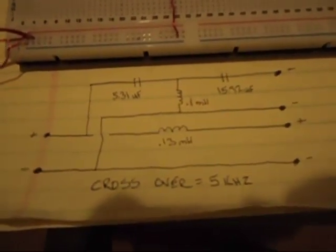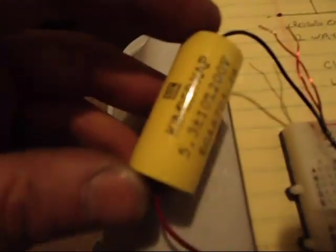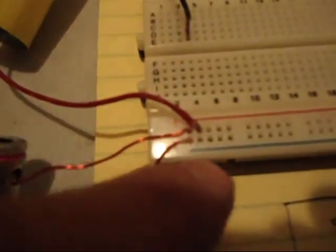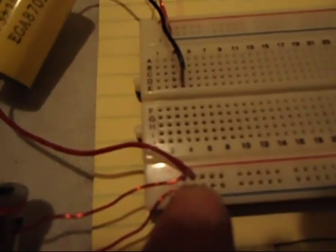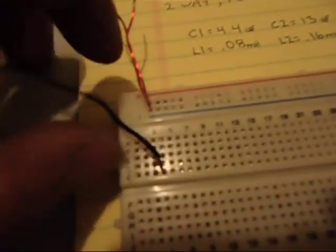Alright, what I have so far is my connections from my amplifier's positive and negative. I'll put a 5.3 microfarad capacitor in series from positive, this first one.